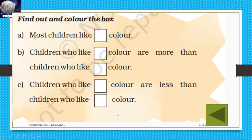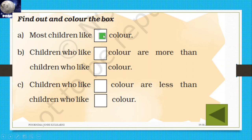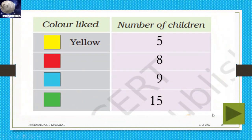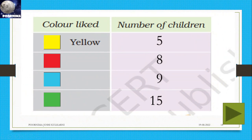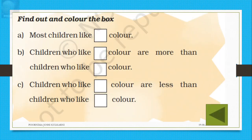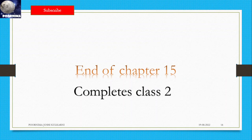Most children like green color — fifteen students. Children who like green color are more than the children who like blue color. Green is the most liked color. Children who like yellow are less than the number who like green. This completes chapter 15 and the whole syllabus of class 2. Thank you.